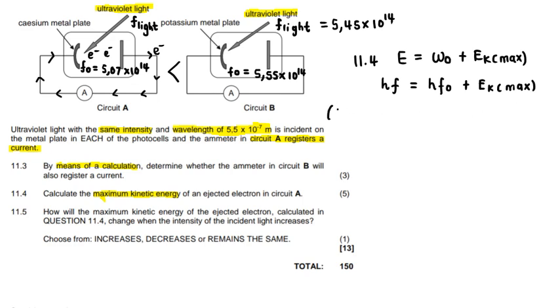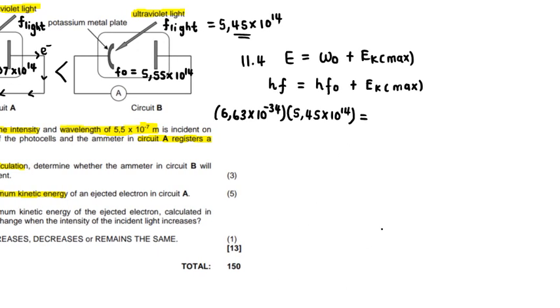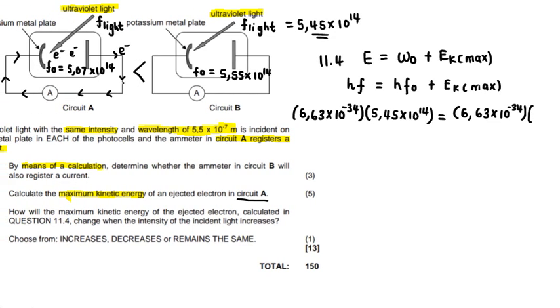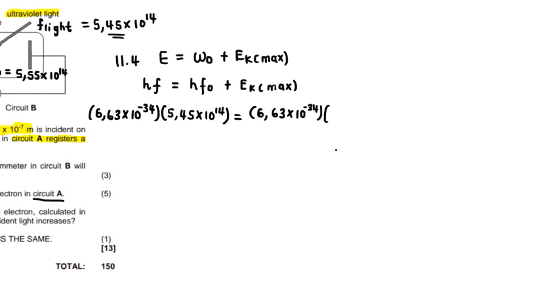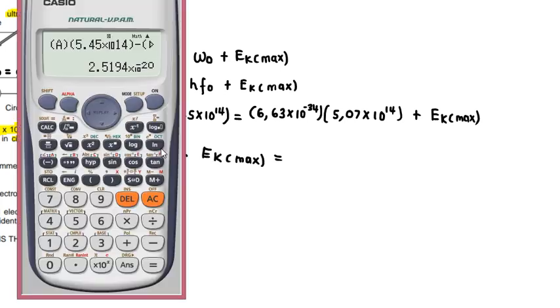Now, all of these things need to be substituted. 6.63 times 10 to the negative 34. And now this frequency, remember, is this frequency of the UV light. So it's the 5.45 times 10 to the exponent 14. This must then equal. Again, Planck's constant times the threshold frequency. But remember, we are working in circuit A now. So it is basically the threshold frequency of the caesium. So it's 5.07 times 10 to the negative 14. I'm not going to show any other rearrangement here. I'm just going to calculate it immediately on the calculator.